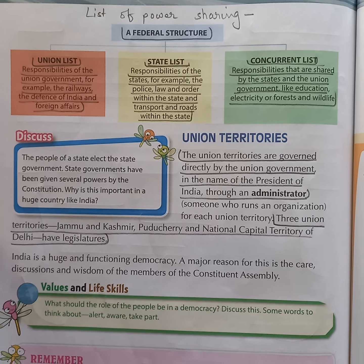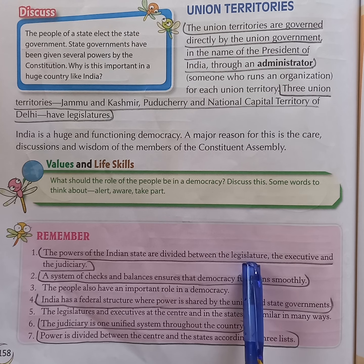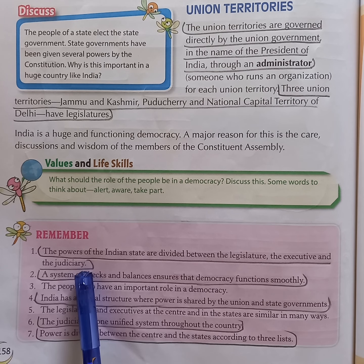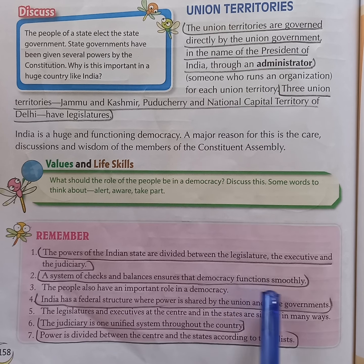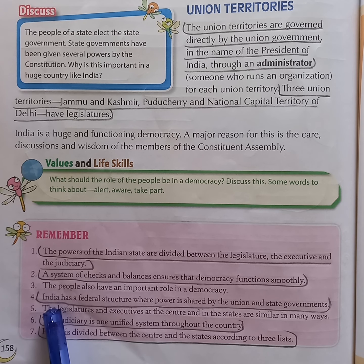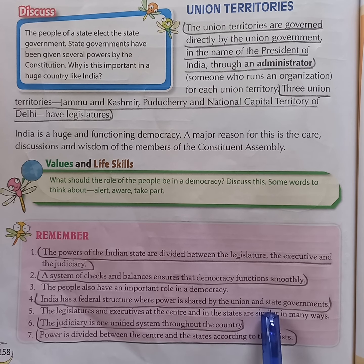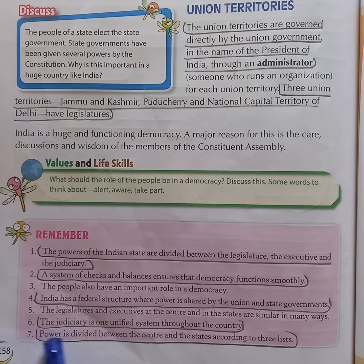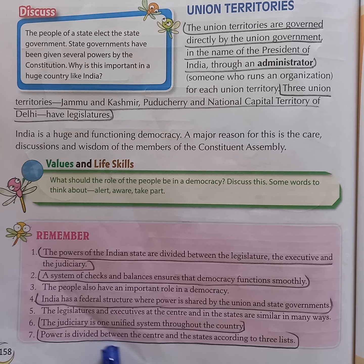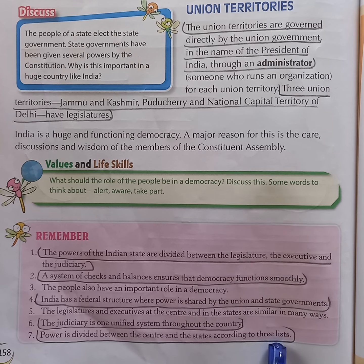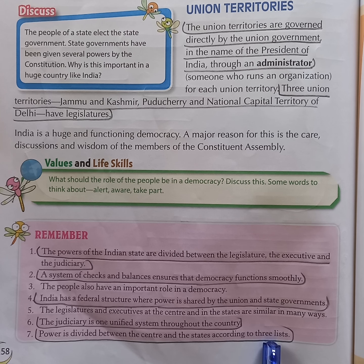Important points to remember: the power of the Indian State is divided between the Legislature, the Executive, and the Judiciary. A system of Checks and Balances ensures that democracy functions smoothly. India has a federal structure where power is shared by the Union or Central Government and State Governments. The Judiciary is one unified system throughout the Union. The power is divided between the Centre and the State according to three lists — the Union List, the State List, and the Concurrent List.